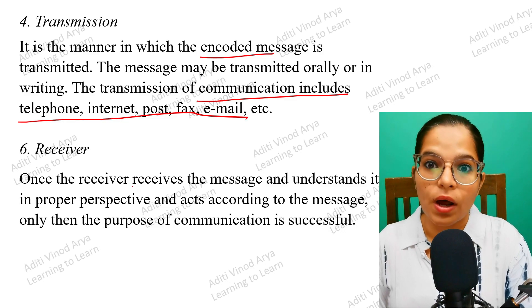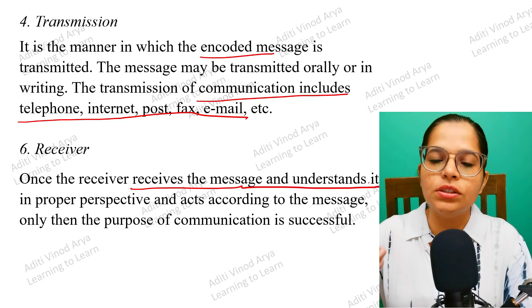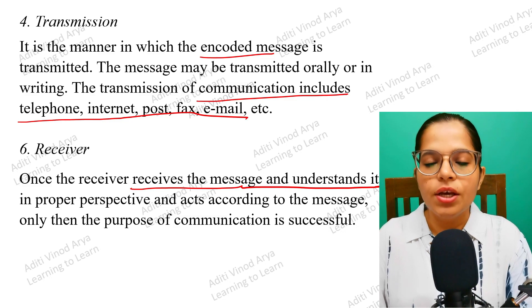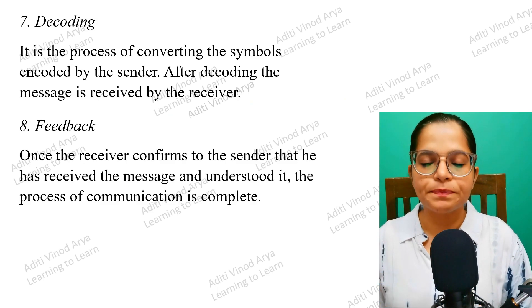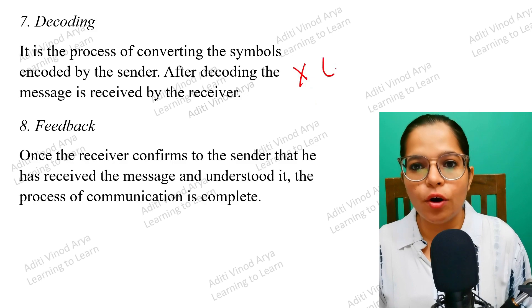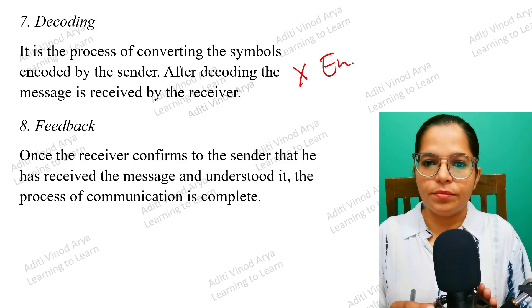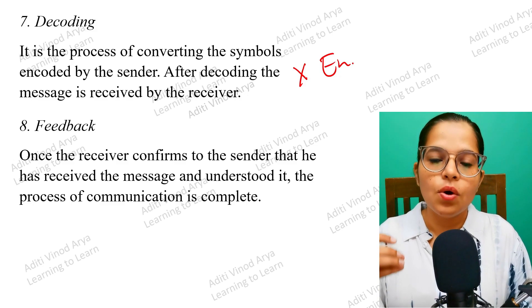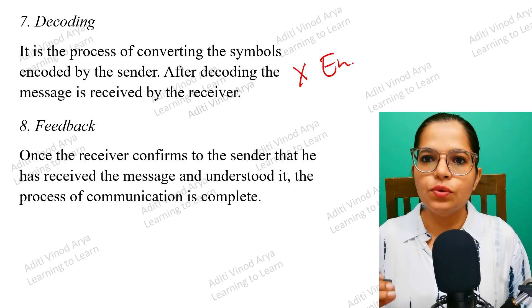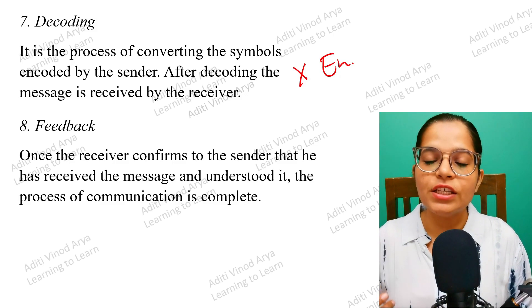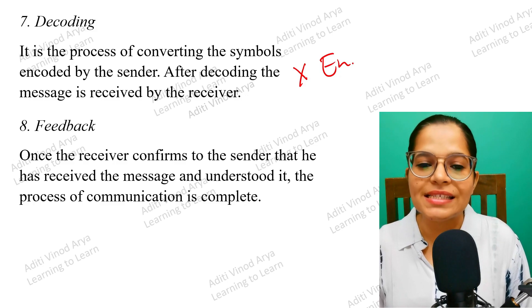The Receiver is the person who receives the message, understands it, and then responds or reacts accordingly. After the receiver, we have two more important elements: Decoding and Feedback. Decoding is the opposite of Encoding. In encoding, you formulate how to send the message and what words or medium to use. In decoding, the other person tries to understand the message once it has been sent.